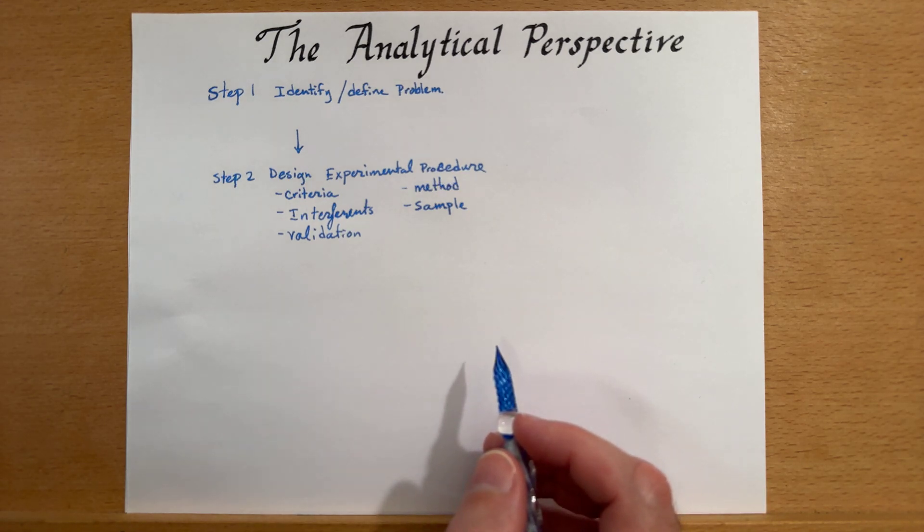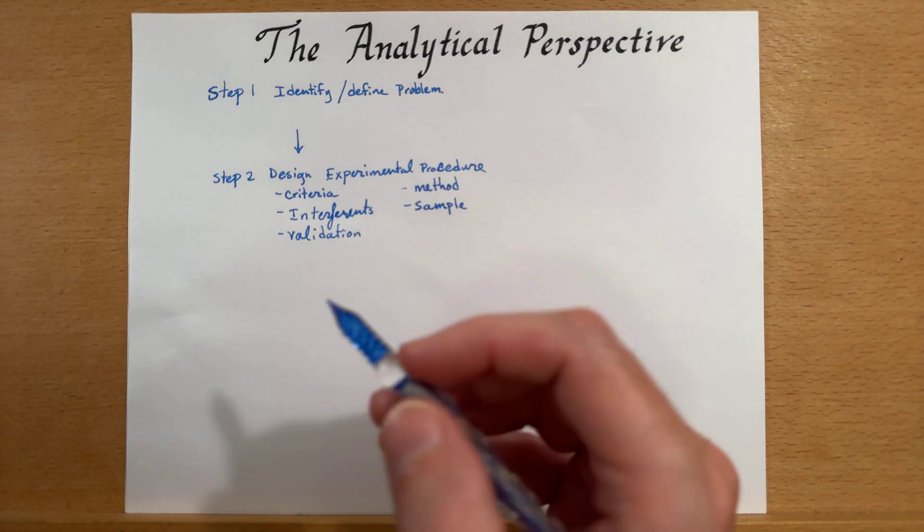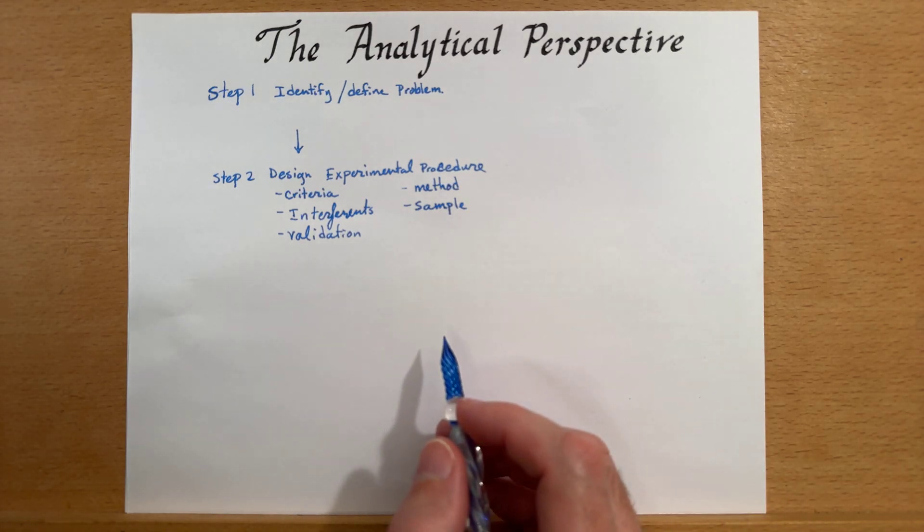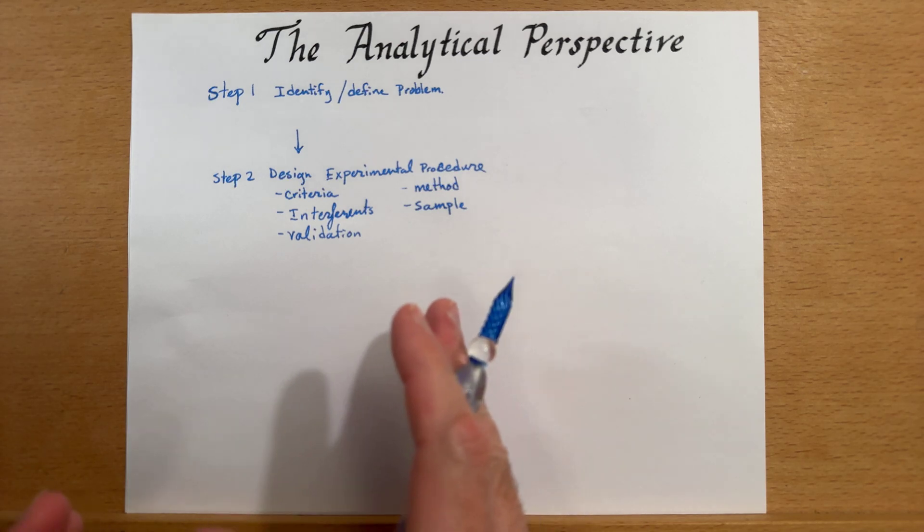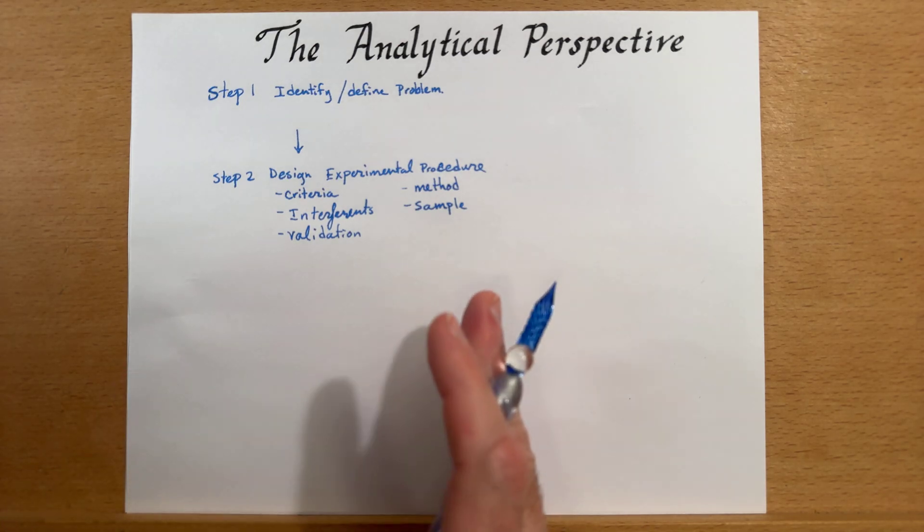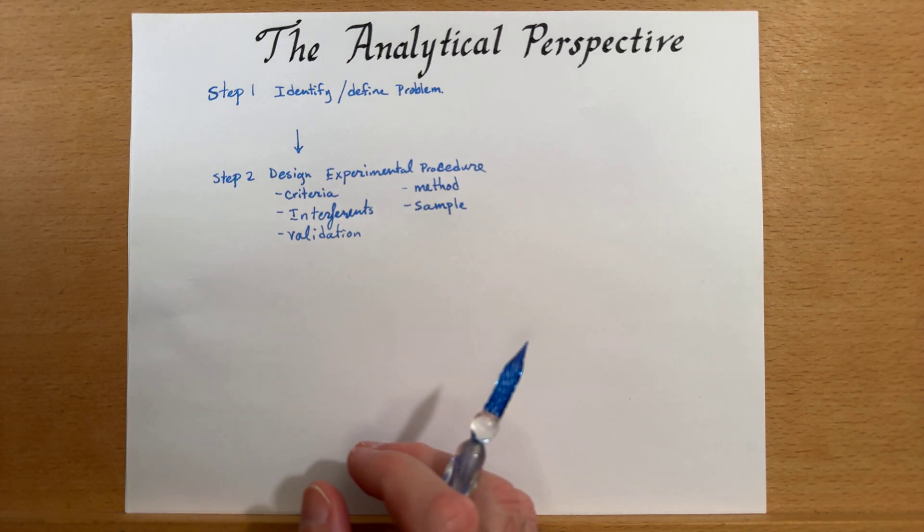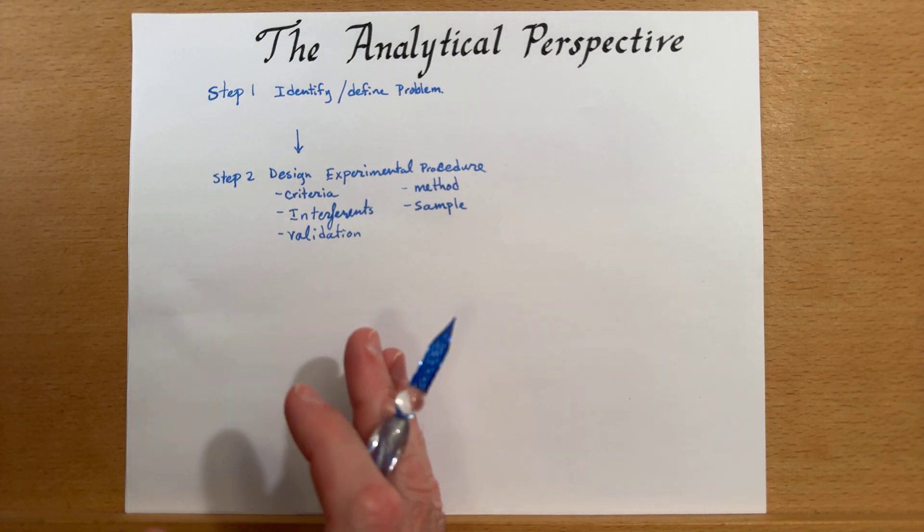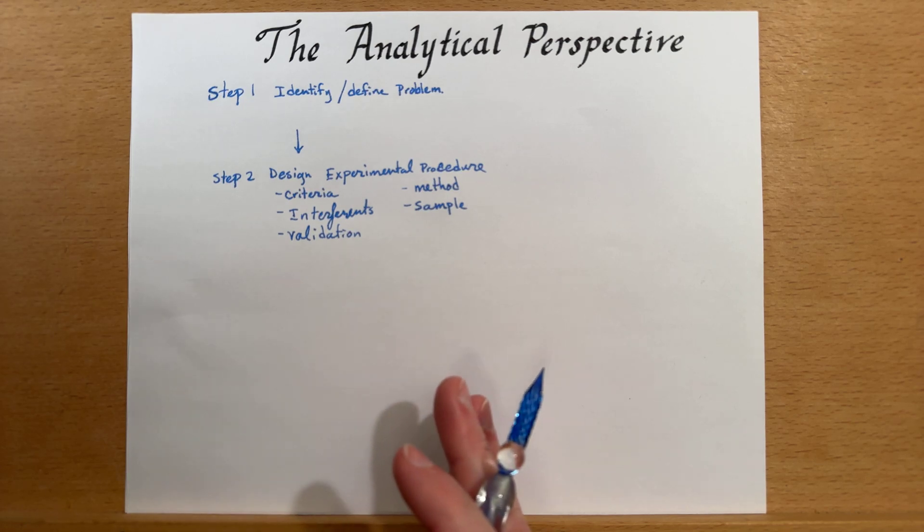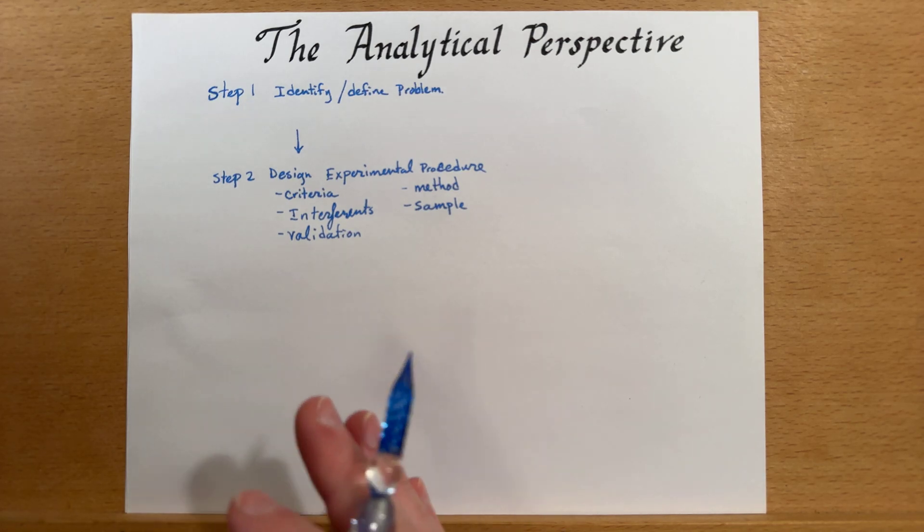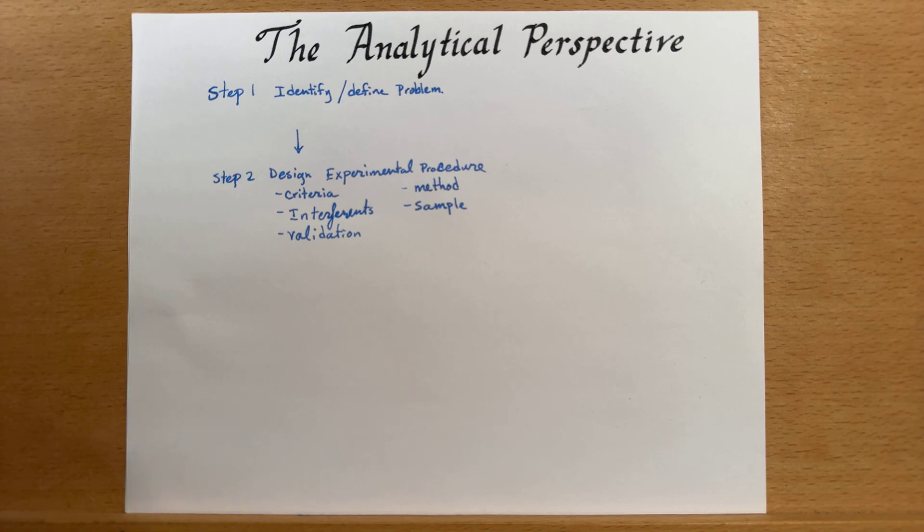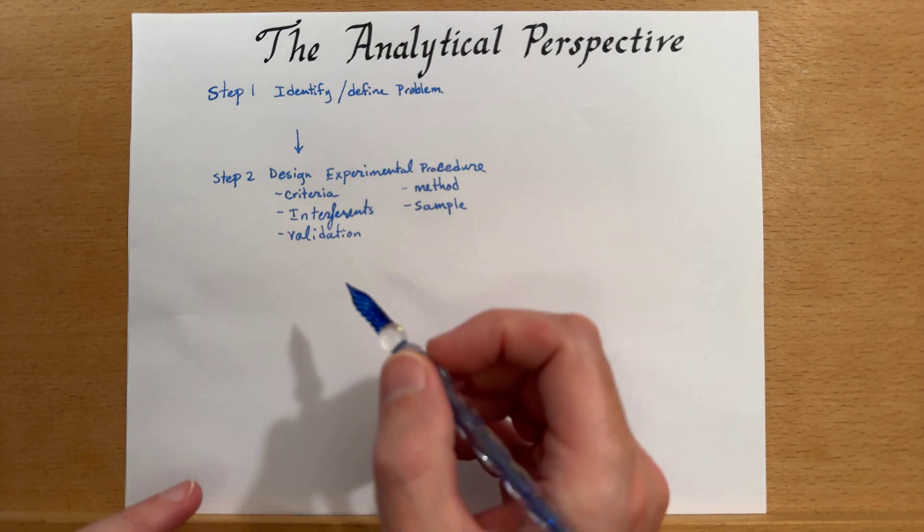When we're looking at an analytical design of a method, we have to think about how are we going to sample this. We have to have a plan. We have to think about what containers we're going to keep this sample in, what temperature, where the sample was taken from. All of these things come into play, and we'll talk about those more later. But these are things that an analytical chemist thinks about, because they're important.